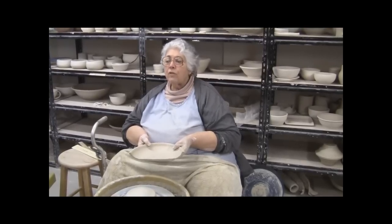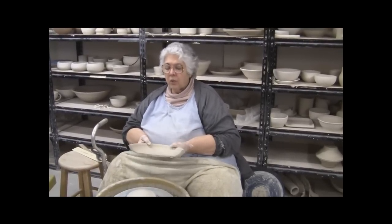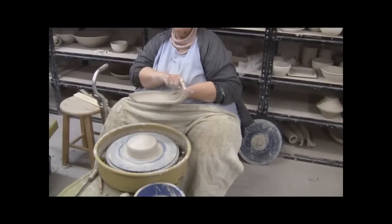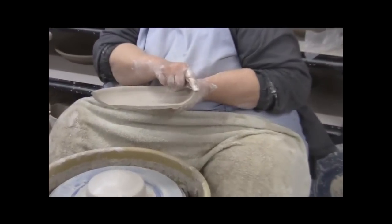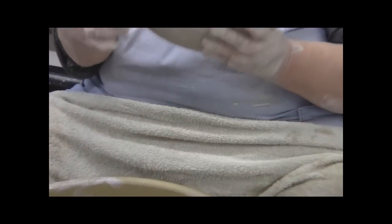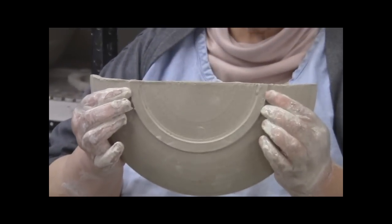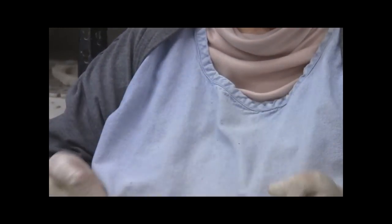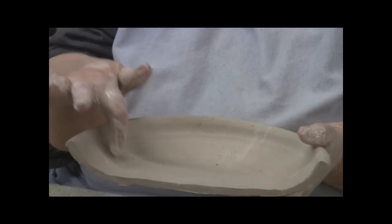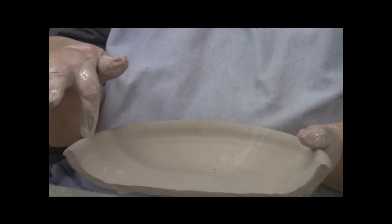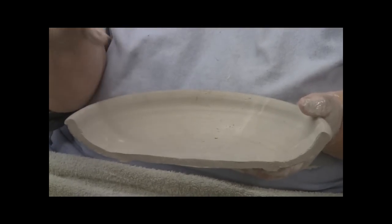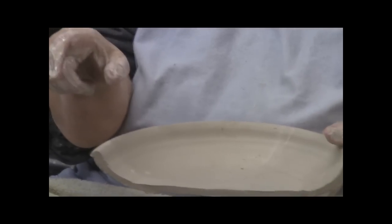When you make the first plate, you are going to measure the width side to side. You are going to measure the width of the foot rim once you have trimmed it. You're going to measure the depth of the plate. If it's a plate with a rim, which we will show you later, you're also going to measure the width of the rim.